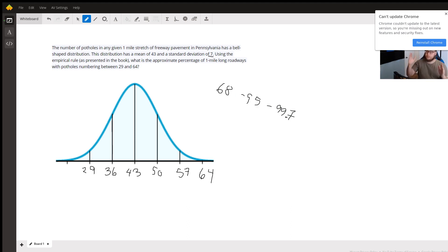because 95% would tell us all of the roads between two above and two below, and the 99.7% would tell us the population between three above and three below, but we have three above and two below.